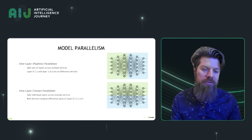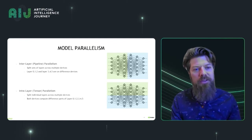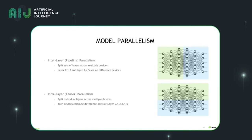In order to do this, we use a lot of model parallelism. There's interlayer parallelism, sometimes called pipeline parallelism, where we take different layers of the neural network and split them across multiple devices. For example, the green layers are on one device and the blue layers are on another device. We also have intralayer, or sometimes called tensor parallelism, where the layers individually are split across multiple devices. We use both of those in Megatron.